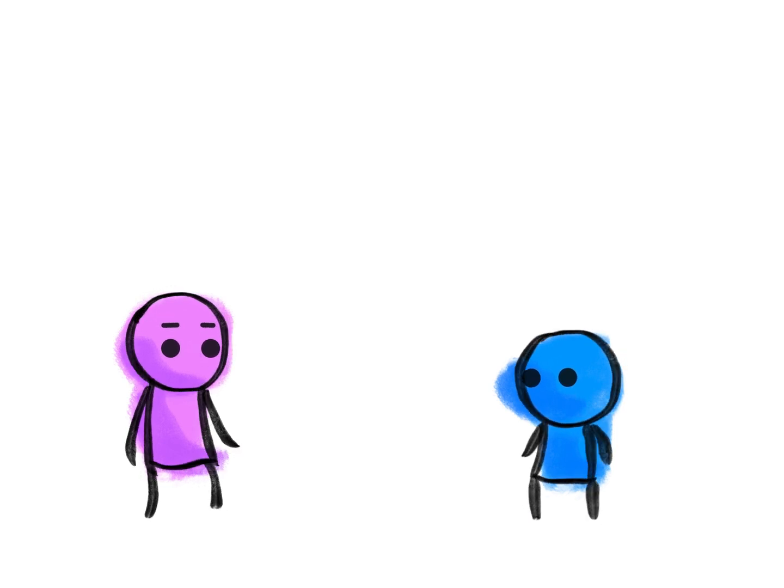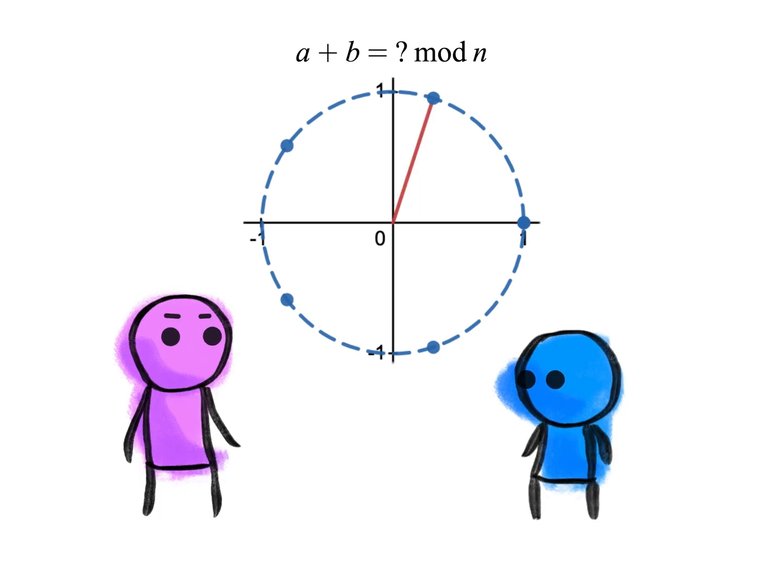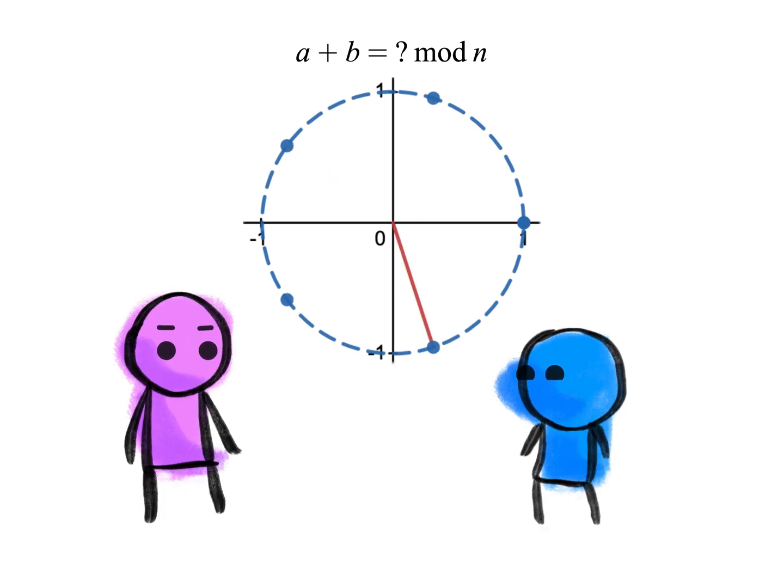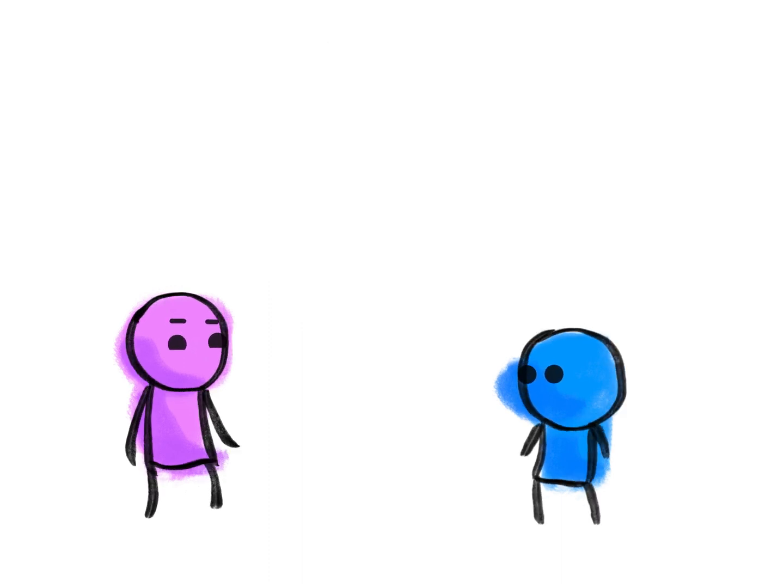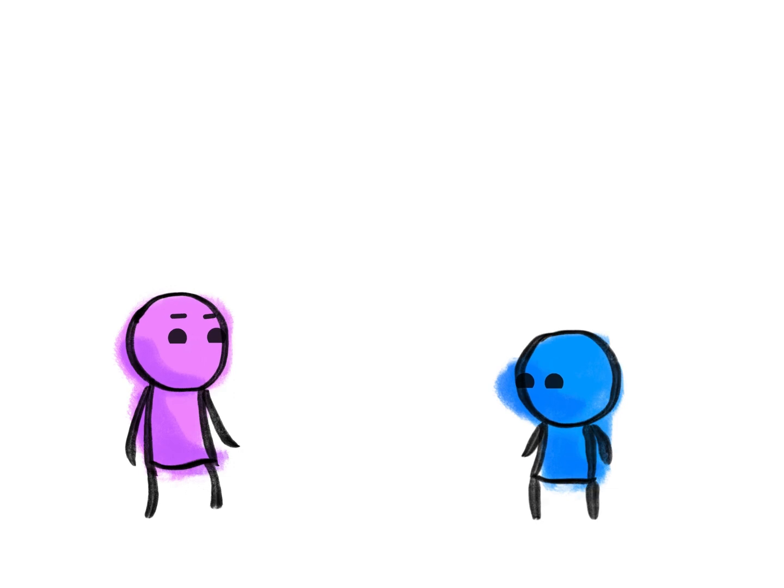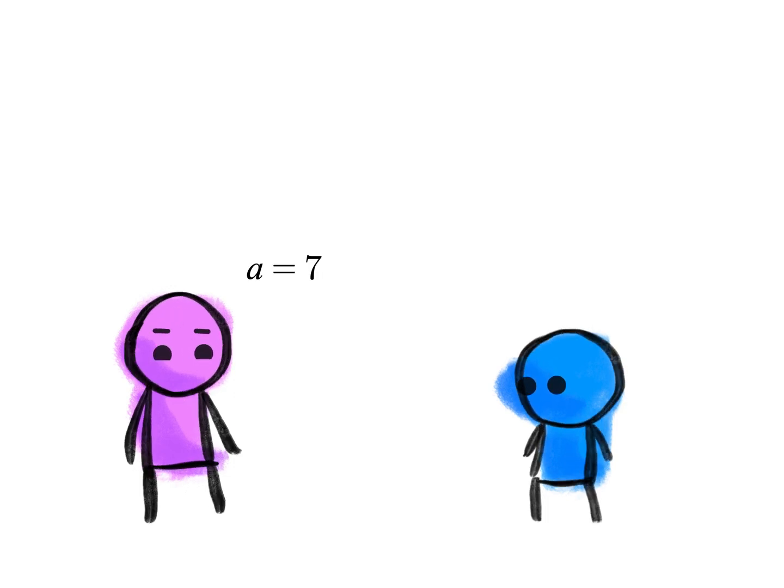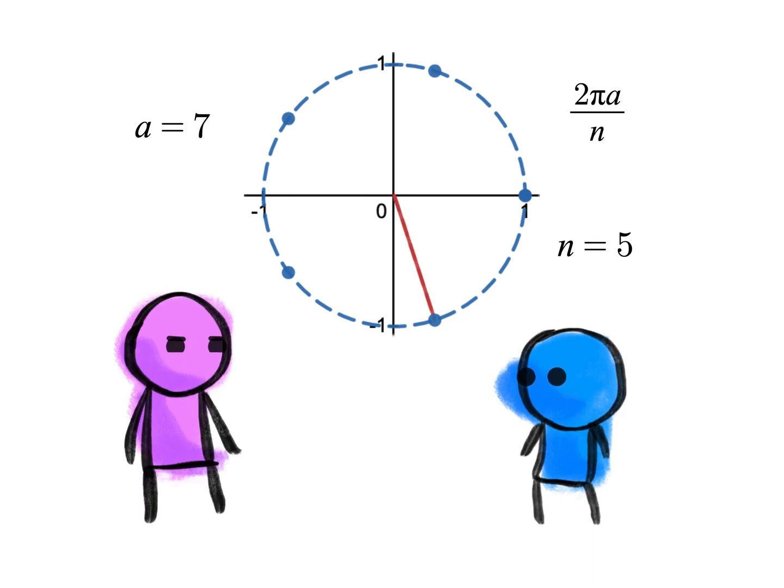So the way to think about it is modular addition is fundamentally about rotation around the unit circle, or at least it is equivalent to thinking about rotation around the unit circle of angle, say, 2π over n. And you can think of the integer a as rotate by the angle 2πa over n.